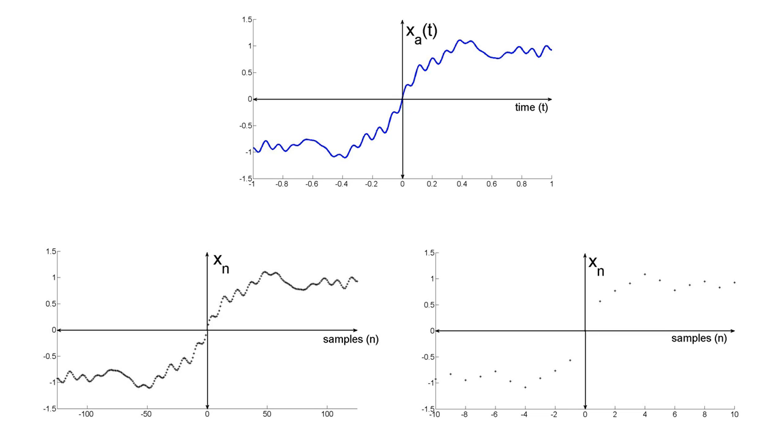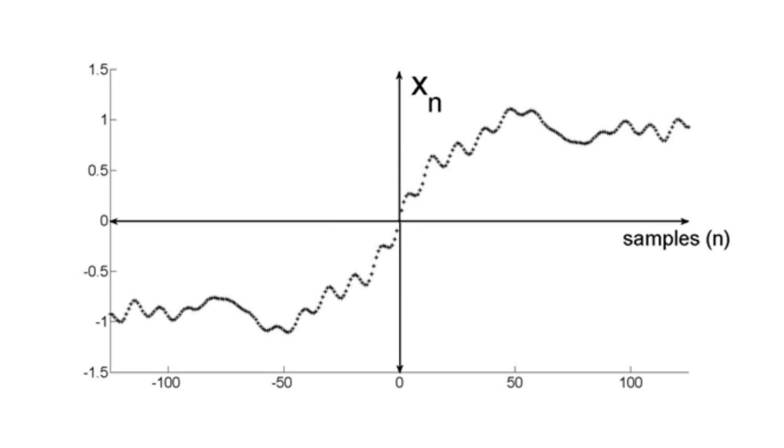When we have a band-limited signal, we can approximate the analog signal X sub A of T with the digital signal X sub N. The N tells us that X is a function of samples, N, rather than a function of time, T.